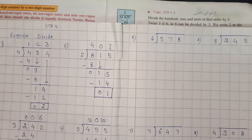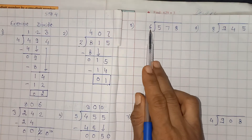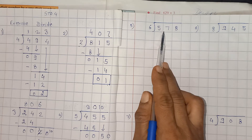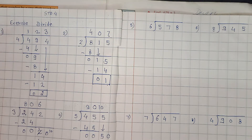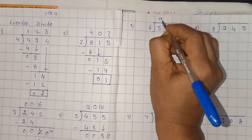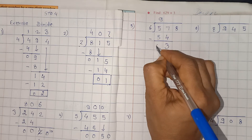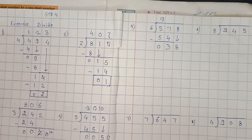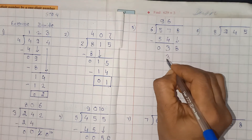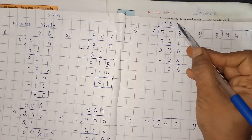Now we will see question number 5: 578 divided by 6. Sabse pehle 57 ko 6 se divide kar lenge. 6 ki table mein 57 se small number aata hai — 6 nines are 54. Yahan pe likh diya humne, minus 54. 7 minus 4 is 3 and 5 minus 5 is 0. 8 ko hum yahan neeche le lete hain. 6 ki table mein 38 se small number 6 times aata hai — 6 sixes are 36, minus 36. 8 minus 6 is 2 and 3 minus 3 is 0. So answer is 96 and remainder is 2.